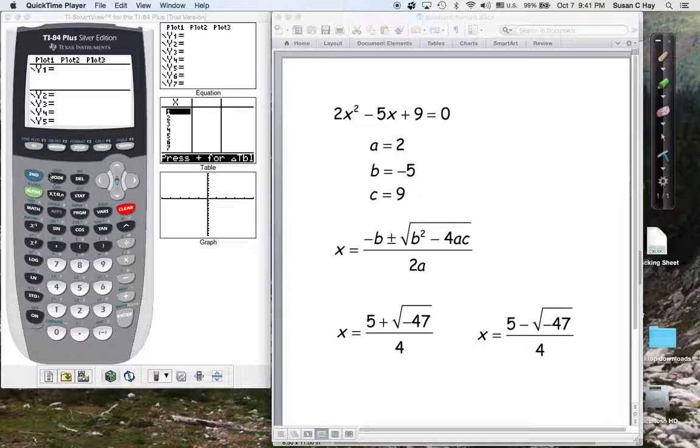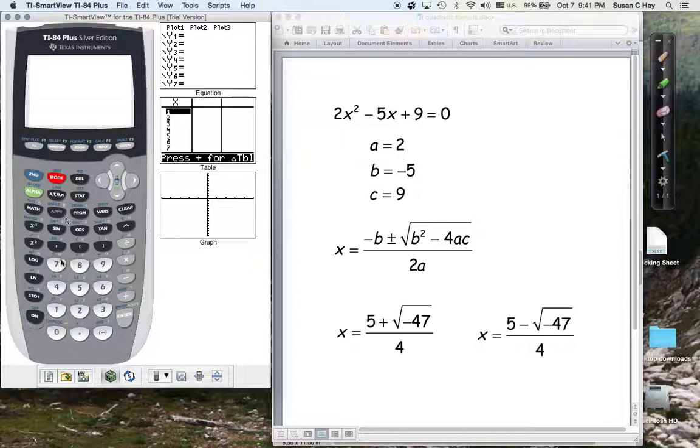In fact, let's go into here. If you try to take the square root of a negative number, let's put negative 47 into there and see what happens. It's a non-real number.